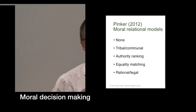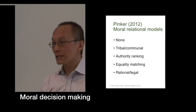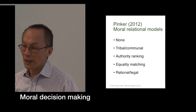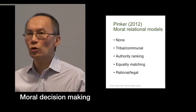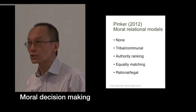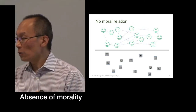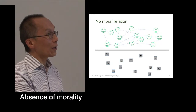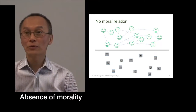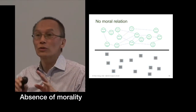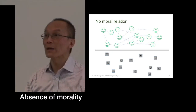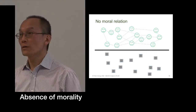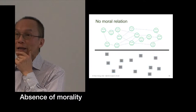Perhaps the first one isn't a model — it's just the absence of such reasoning. But then there's tribal/communal reasoning, authority ranking, equality matching, and rational legal. All of these words will be familiar to you, but it's the way that they're synthesized together which I think is new. The no moral relation model basically says you're a member of a group, but there are other people that you don't treat as people — they're objects, they're animals. You can use terms to denigrate them, and at worst, killing them or enslaving them, because they carry no moral value.